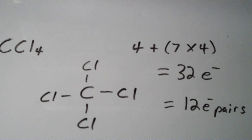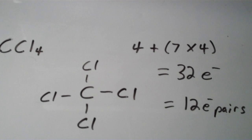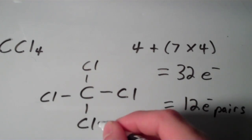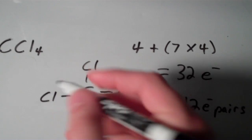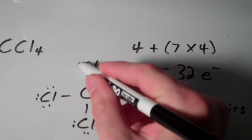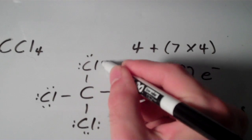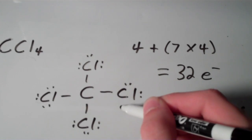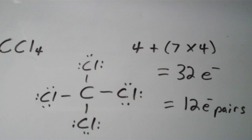Now we can just start adding lone pairs to the chlorines until they're all used up, making sure all electron pairs are accounted for. We have 12 left, and counting them out: one, two, three, four, five, six, seven, eight, nine, ten, eleven, twelve. We've used up all of our electron pairs and everything has an octet.